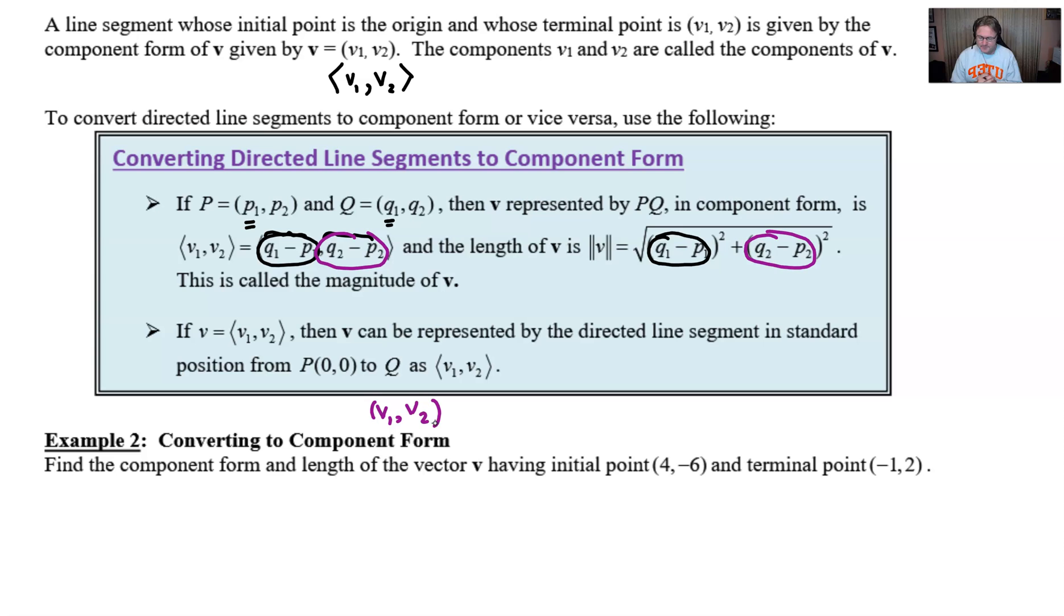So let's take a look at our example. Find the component form and length of the vector v that has the initial point (4, -6) and the terminal point (-1, 2). And so to do that vector v using our notation is just simply going to be, we use our vector bracket right there and then we can start with our component form negative one minus four first of all, and then we'll take the terminal point two and subtract the initial point y component which is negative six. And once we do this cleaning up we have negative five comma eight and that would be our component form for that particular vector.